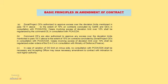Command Chief Engineers are also authorised to approve any excess over the deviation limit to the extent of 10% of contracts concluded by the General Project Chief Engineer in consultation with PCDA or CDA. Cases involving excess of deviation limit over 10% shall be regularised under orders of the Engineer-in-Chief in consultation with the Ministry of Defence through amendment to contract. In case of variation of the deviation limit on the minus side, no consultation with PCDA or CDA shall be necessary. The accepting officer shall issue the necessary amendment to contract with intimation to the next higher authority.